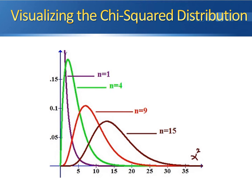The red curve is a chi-squared distribution with nine degrees of freedom. Again, the peak gets moved farther to the right and is much lower than the chi-squared distribution with four degrees of freedom. The final curve is a chi-squared distribution with 15 degrees of freedom — again, the peak moves to the right and is a little bit lower.